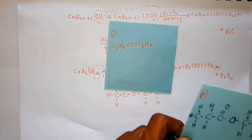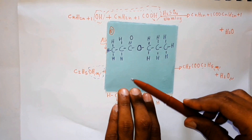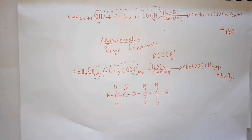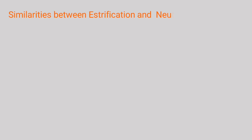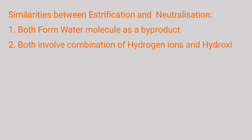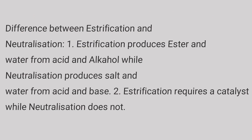Try to name the esters shown and leave your answers in the comment section below. You should know the similarity between esterification and neutralization: both give a water molecule as a byproduct, and both involve a combination of hydrogen ions and OH ions. The difference is that esterification produces ester and water from an acid and alcohol, while neutralization produces salt and water from an acid and a base.